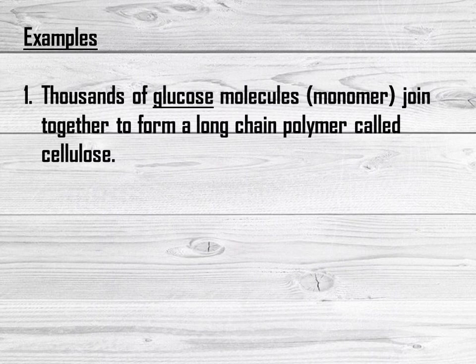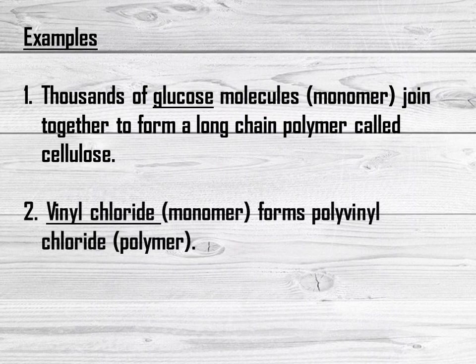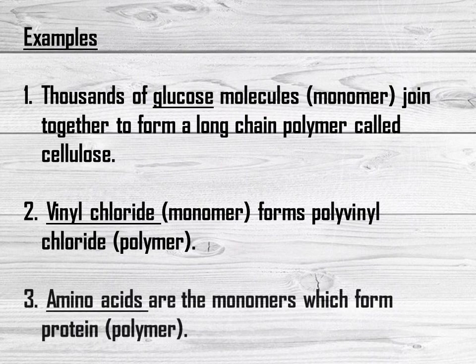Let us take some examples of monomers. Thousands of glucose molecules join together to form a long chain polymer called cellulose. Vinyl chloride, which is an example of a monomer, forms polyvinyl chloride. Amino acids are the monomers which form protein.